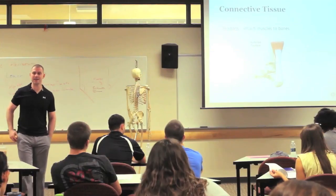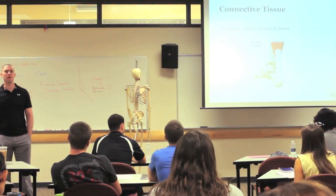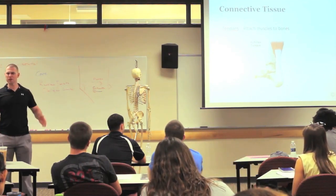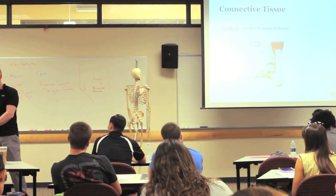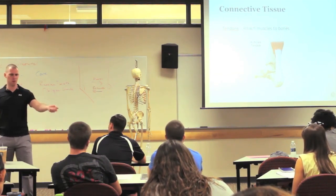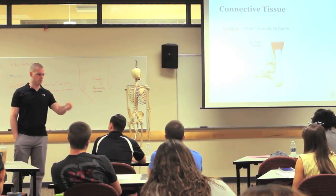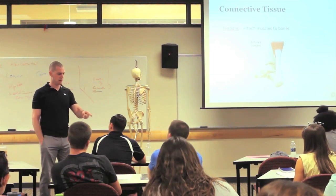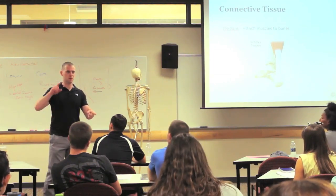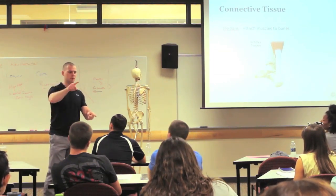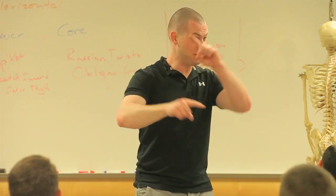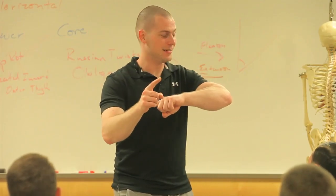Tendons — what do tendons do? Connect what to what? Muscle to bone. So generally speaking, muscles don't attach to bones; tendons attach to bones. So muscles pull on tendons, which then moves bones at a joint, which is supported by ligaments. Just put it all together.